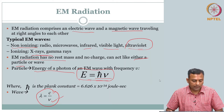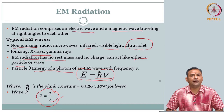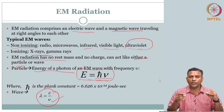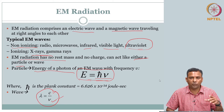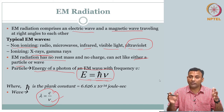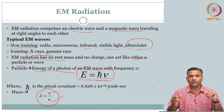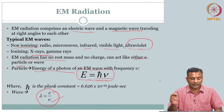Before we proceed with understanding the type of interaction that electromagnetic radiation has with material, let us quickly recognize the chart showing the whole range of the electromagnetic spectrum. In medical imaging systems, you see that it exploits from radio frequency waves to high energy gamma rays.